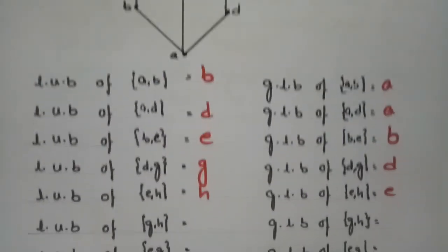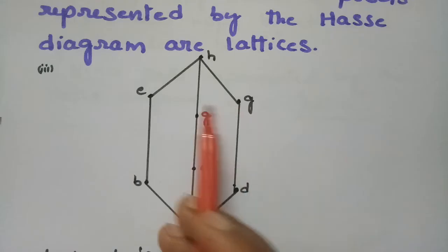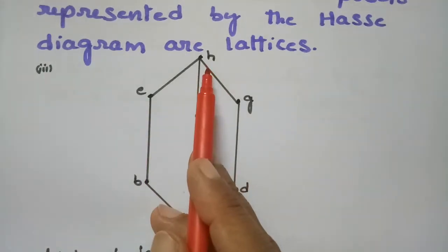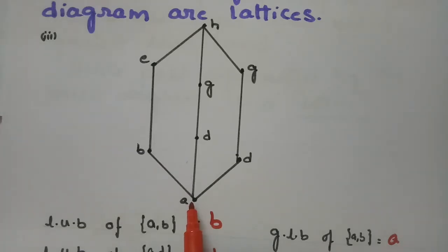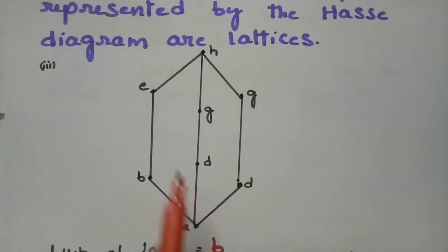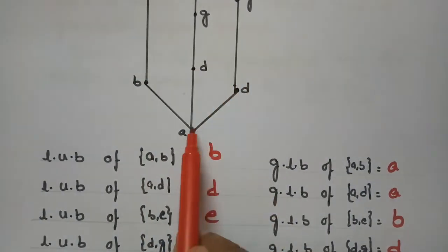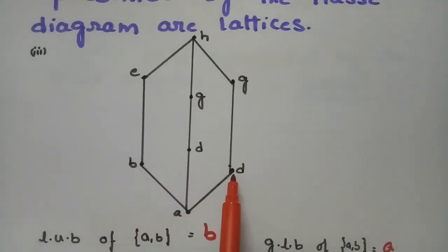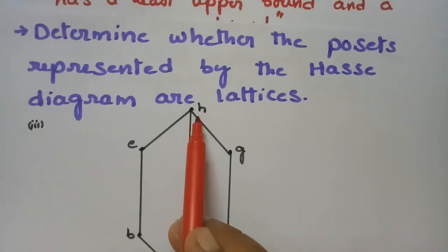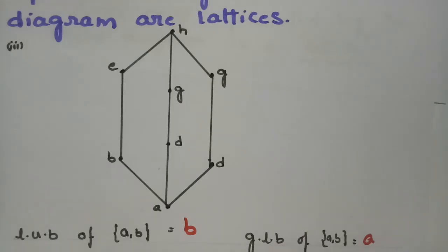Coming to (e, g): the upper bound is h and the lower bound is a — it is a single value. For (b, d): the upper bound is h and the lower bound is a. Every pair of elements of the poset has a least upper bound and a greatest lower bound — supremum and infimum — each as a unique single value.